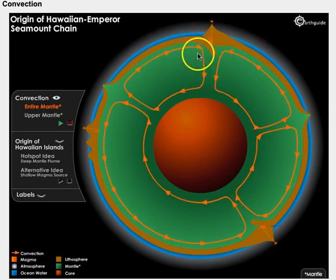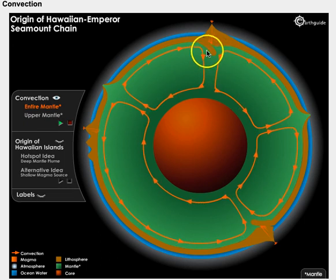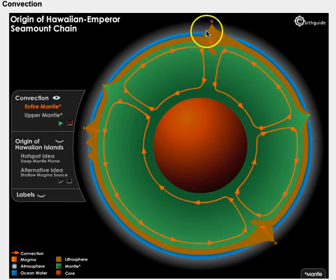When two convection current cells meet each other, the magma has already cooled down, so they converge and sink towards the core to be reheated again. At this portion is what we call a convergent plate boundary.